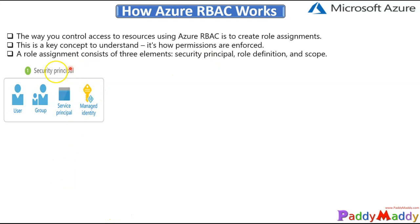Let's take the three different principles or elements. The first one is the security principal. When we talk about security principals, we are talking about either a user object, a group, a service principal, or managed identities. These are the security principals that will be targeted — they are objects that have a profile or have access within Azure Active Directory or from your on-premises environment.